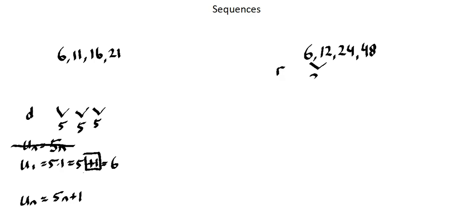When I calculate ratio, 12 divided by 6 is 2. 24 divided by 12 is 2. 48 divided by 24 is 2. So this is a geometric sequence.